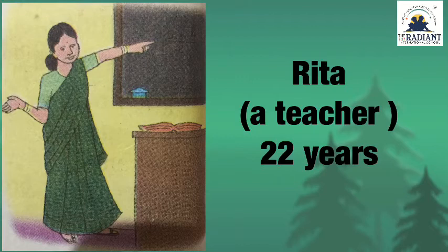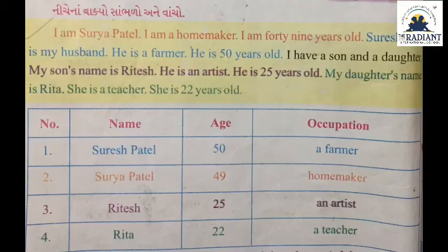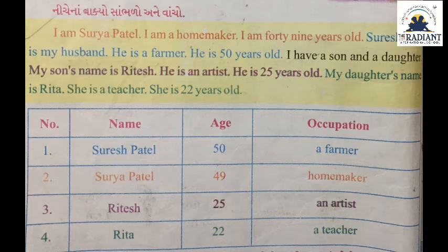Aa chhe ni daughter Rita. Ae teacher chhe, eni umar chhe 22 varsh. Aa chitra tamari book nu chhe, bararbar. Niche na vaakyo sambhado ane vaancho: I am Surya Patel. I am a homemaker. I am 49 years old. Suresh Patel is my husband. He is a farmer. He is 50 years old. I have a son and a daughter. My son's name is Ritesh. He is an artist. He is 25 years old. My daughter's name is Rita. She is a teacher. She is 22 years old.